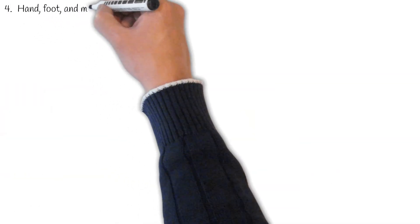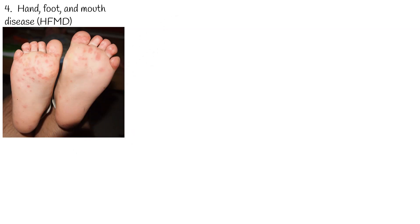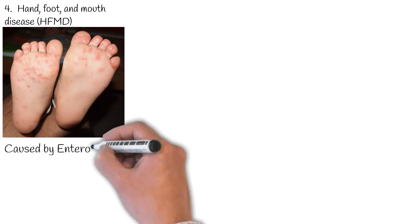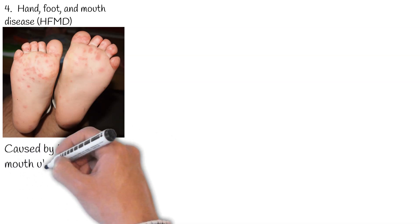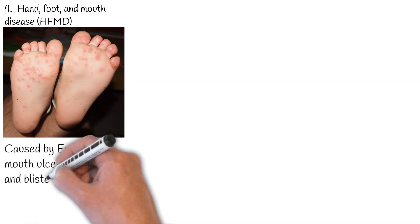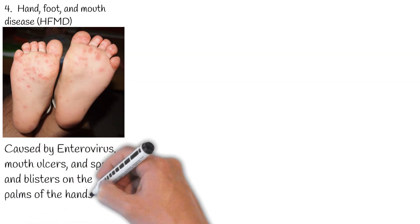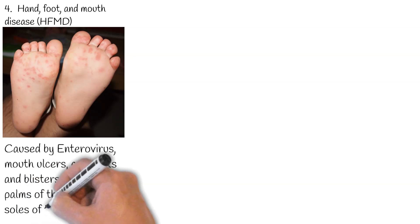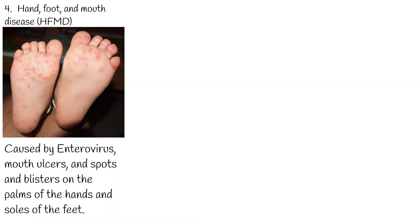Hand, foot, and mouth disease (HFMD) is a common infection caused by a group of enteroviruses. It typically begins with a fever and feeling generally unwell. It causes mouth ulcers and spots and blisters on the palms of the hands and soles of the feet.